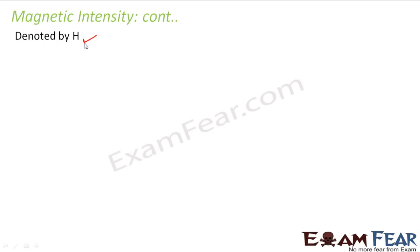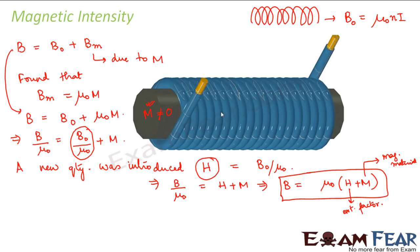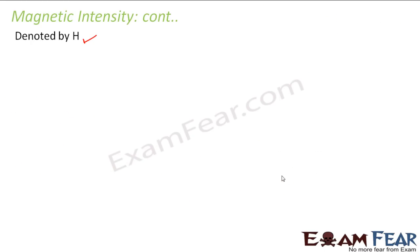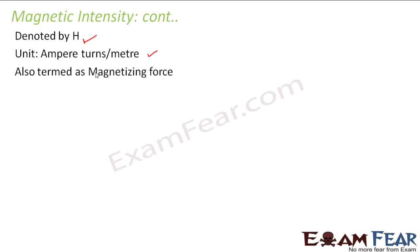Please remember the notation: H for magnetic intensity. Later when we discuss other concepts we will just use H, M, etc., so keep them clear. The unit for magnetic intensity is derived from B₀/μ₀ and comes out to be ampere-turns per meter. Magnetic intensity is also known as magnetizing force.